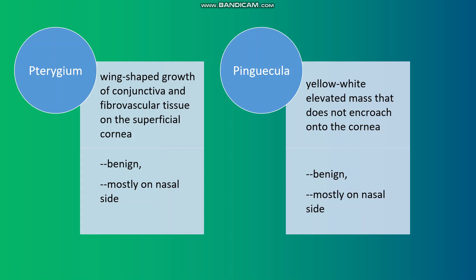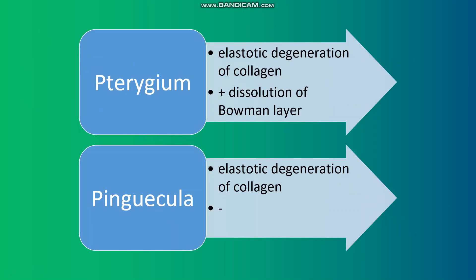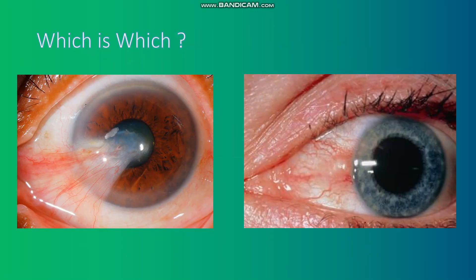Both conditions are benign and they are mostly on the nasal side. Let's look at these pictures again and now we can answer the question. The left image is pterygium — we see the lesion on the cornea, it encroaches onto the cornea. The right picture is pinguecula — this is the lesion and it doesn't encroach onto the cornea. It is limited to the limbus.